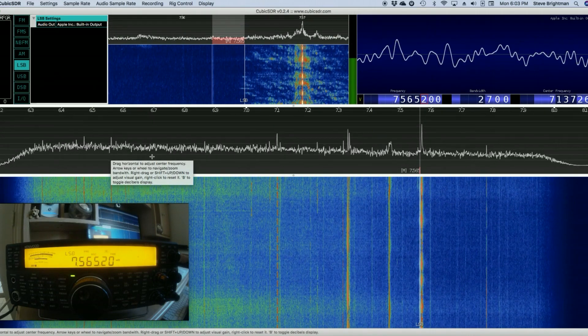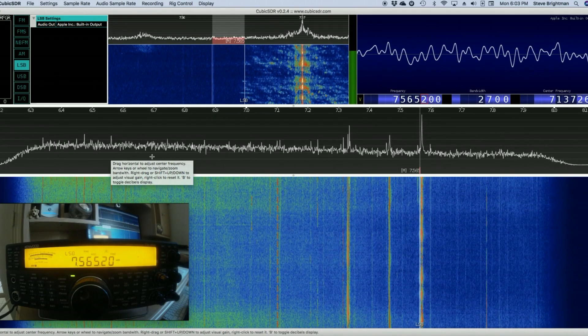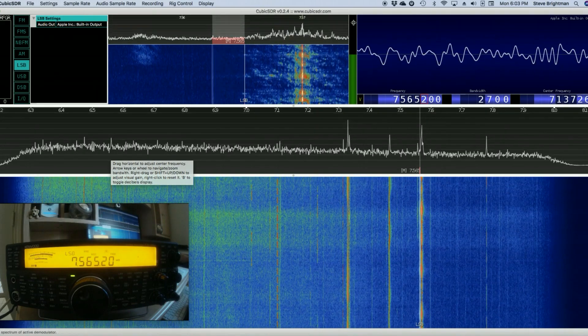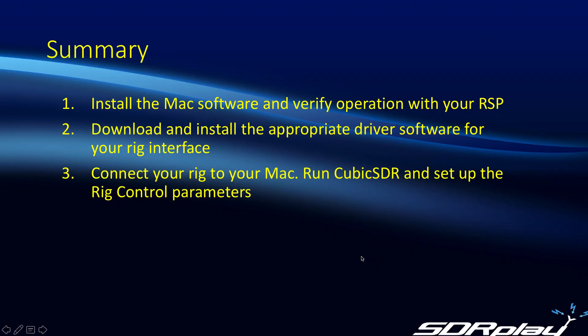And that's really all there is to it. So let's go back and review what we did to get to this point. In summary: the first step was to install the Mac SDR software — in this case CubicSDR — and verify that it operates correctly with your RSP. The second step is to download and install the appropriate driver software for your rig interface. And then thirdly, connect your rig to the Mac, run CubicSDR, and set up the rig control parameters. And that's all there is to it.